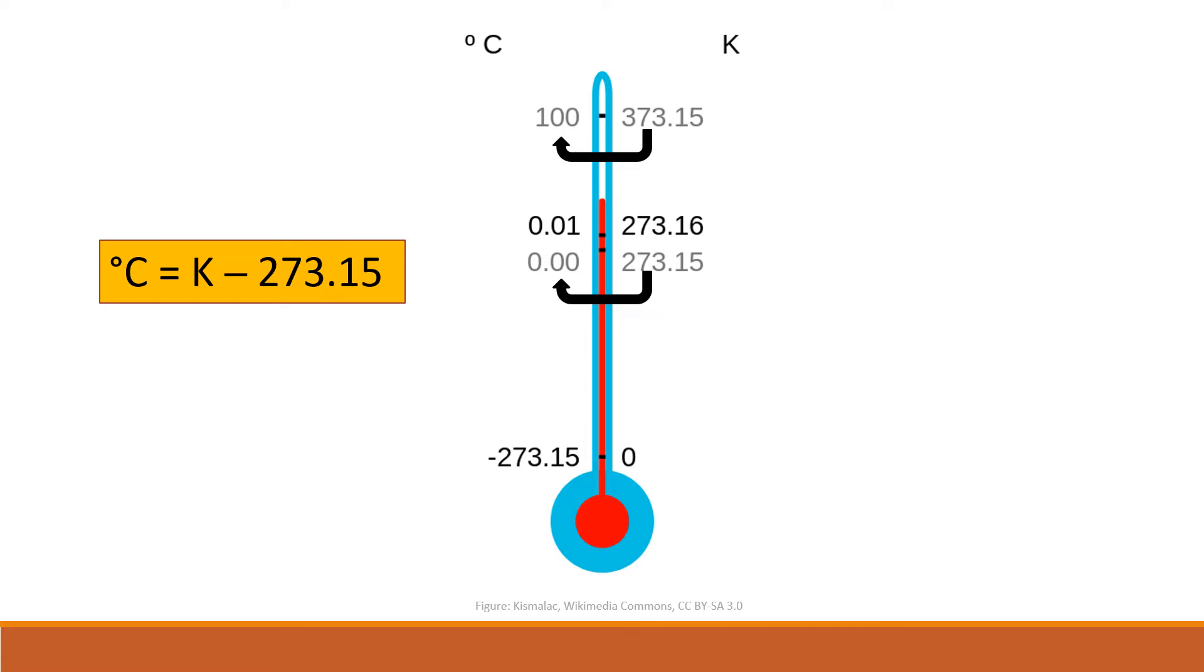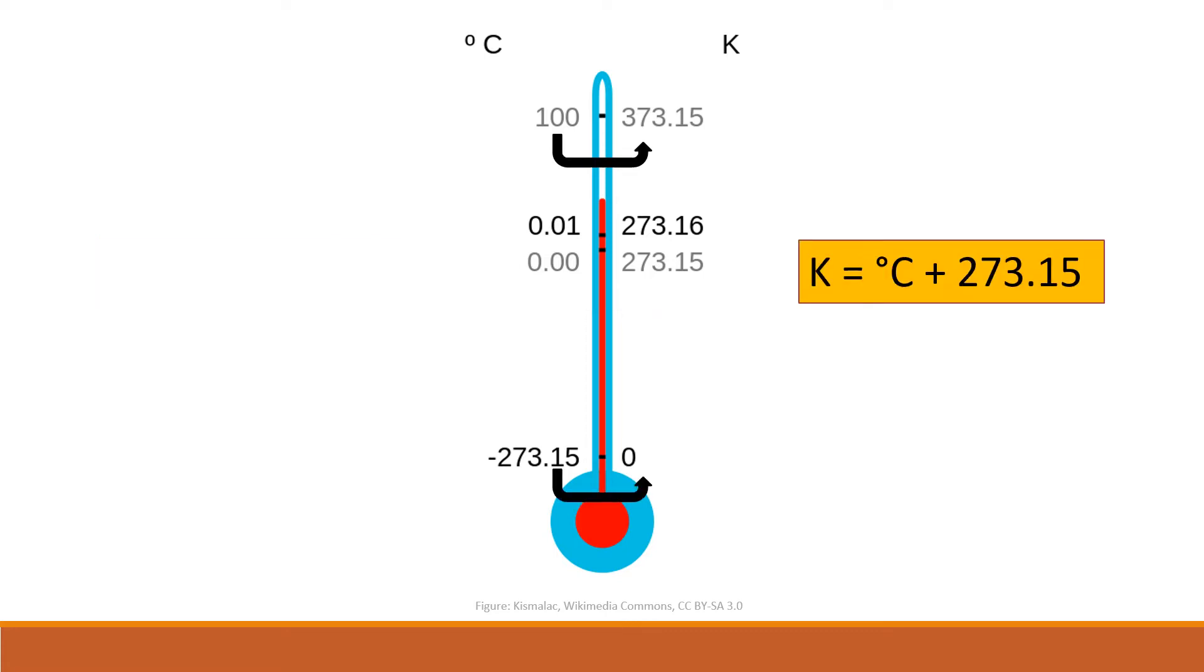For converting Kelvin to Celsius, simply subtract 273. The conversion to Kelvin is remarkably easy. Add 273 to your Celsius temperature.